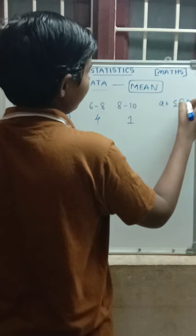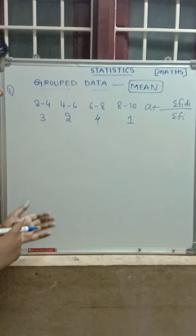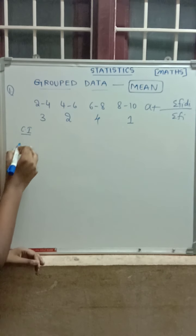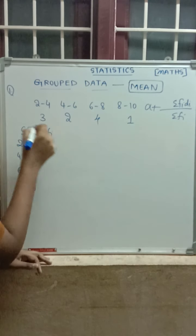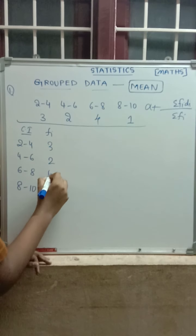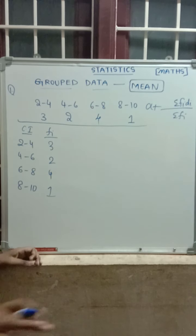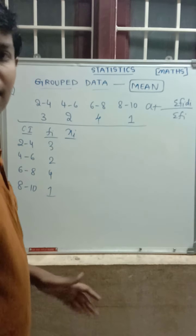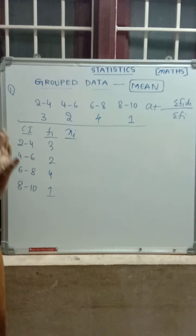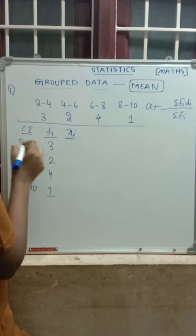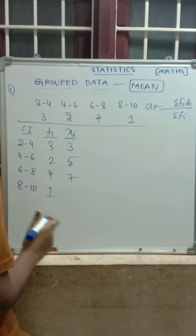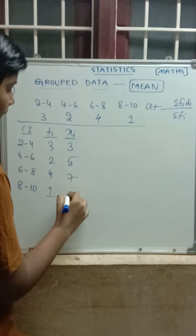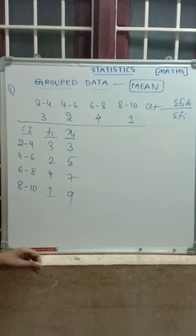Writing the formula again: Mean = A plus summation Fi·Di by summation Fi. The table has class intervals 2–4, 4–6, 6–8, 8–10 with frequencies 3, 2, 4 (and last one). We find Xi (midpoints): (2+4)/2 = 3; (4+6)/2 = 5; (6+8)/2 = 7; (8+10)/2 = 9. So the Xi values are 3, 5, 7, 9.